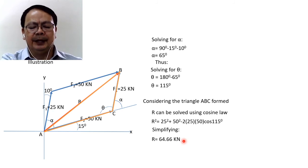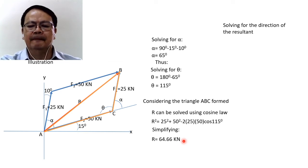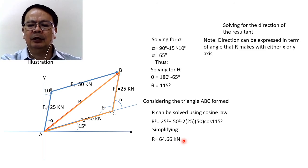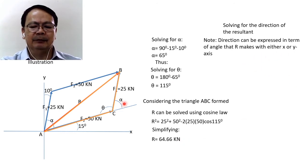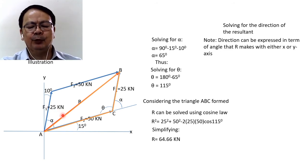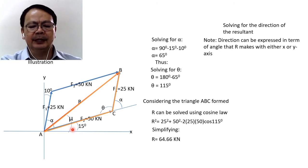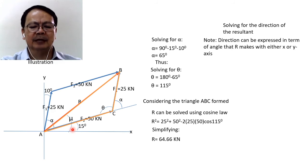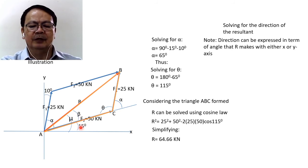After computing the magnitude of R, we now solve for its direction. The direction of the resultant can be expressed as the angle R makes with respect to either the x or y-axis. We want to determine the angle mu that R makes with respect to the x-axis. This angle mu equals 15 degrees plus angle beta, which is not yet known, so we need to compute angle beta.